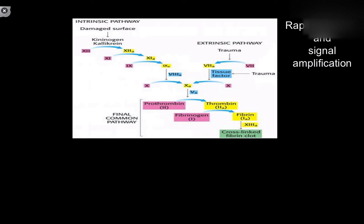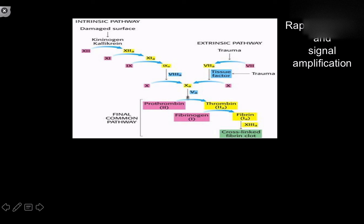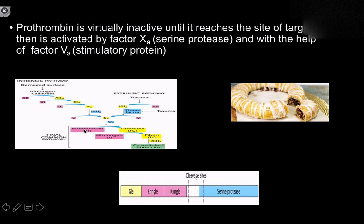Another example of extracellular proteolytic cleavage cascades leading to a rapid response would be the clotting cascade. Either the intrinsic pathway or the extrinsic pathway — through enzymatic cascades or in this case the glycoprotein tissue factor — they all converge on a final common pathway. This is not just useful in that both pathways converge on it, but a lot of drugs work by modifying this final common pathway. The first proenzyme we work with is prothrombin.